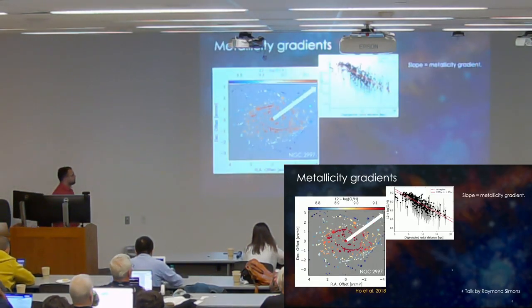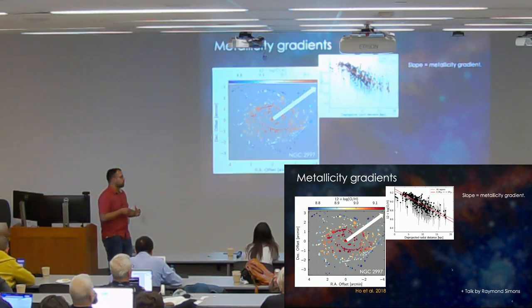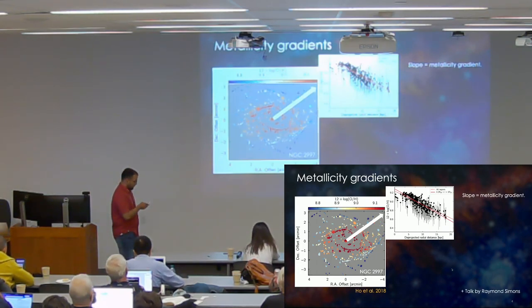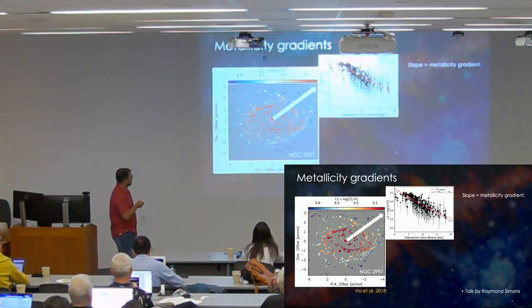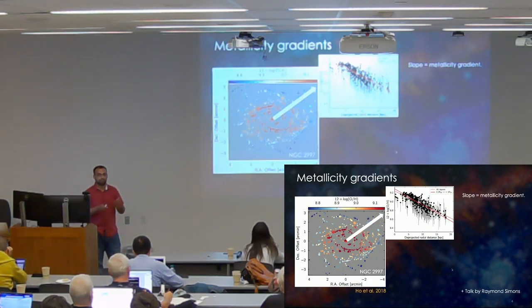Raymond already touched this a bit in his talk this morning, but just to sort of summarize, to first order, we see that galaxies, at least in the nearby universe, show this inside-out metallicity gradient where if we measure metallicities in individual H2 regions in galaxies, we see that the galaxies are more metal-enriched in the centers as compared to the outskirts. And they usually follow a metallicity gradient that can be steep or flat or even possibly in some cases inverted.